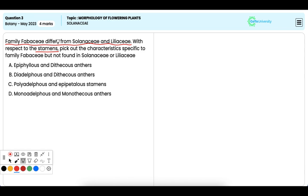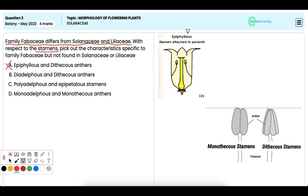Option A: Epiphyllous and Dithecous anthers. Now it is incorrect. Epiphyllous stamens, that is the one which is attached to the perianth, are seen in Liliaceae and Dithecous anthers are common in most angiosperms, but Epiphyllous is not specific to Fabaceae.